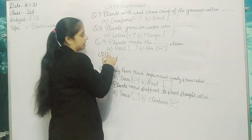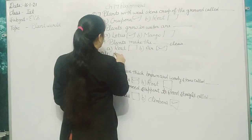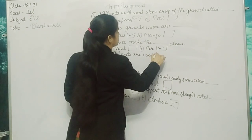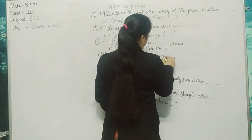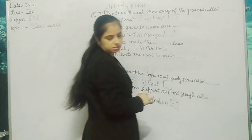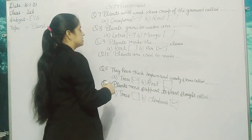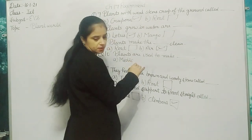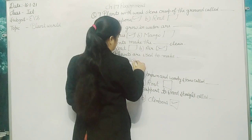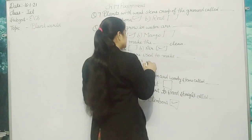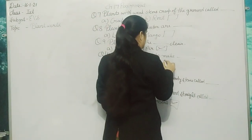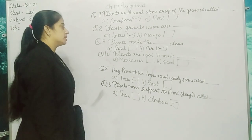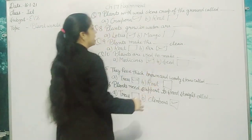Question 10: Plants are used to make dash — medicines or seeds? Option A: medicines. Option B: seeds. Plants are used to make medicines. So our question 10 is done.